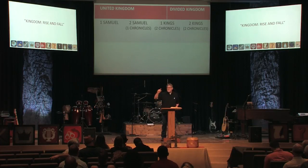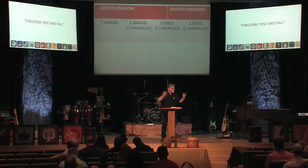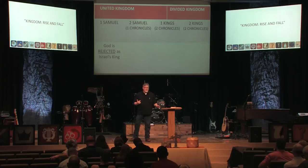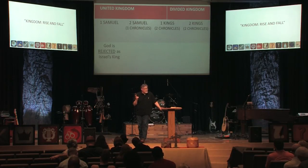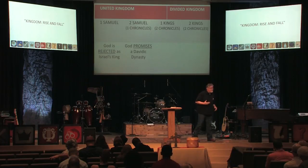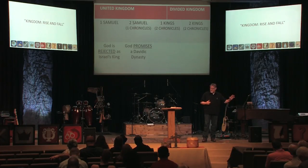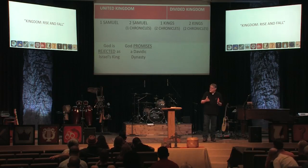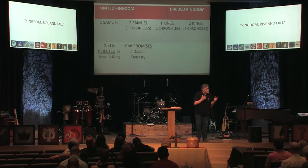In 1 Samuel, God is rejected as Israel's king. In 2 Samuel, God promises a Davidic dynasty — the kingdom period starts, and its highlight was David, who is promised a dynasty giving us more information about the coming Messiah, who would be of the lineage of David, sitting on the throne and ruling forever. In 1 Kings, a divided king leads to a divided kingdom. And in 2 Kings, it just gets worse and worse.